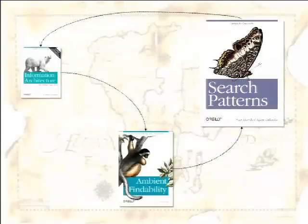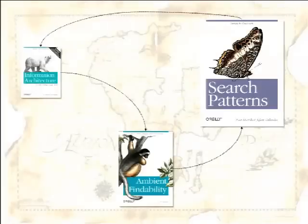Along the way, I've written a number of animal books — information architecture, ambient findability, and search patterns. My talk today will touch on each of these topics because, as I hope you'll agree, they're all hopelessly intertwingled.